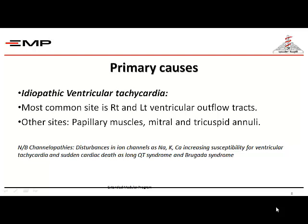Or it can originate from the left ventricular outflow tract — the outflow tract being the portion of the ventricle that extends from the AV valves to the great vessels. From the LV, it extends from the mitral outflow to the aorta; from the RV, from the tricuspid outflow to the pulmonary vessels. Other uncommon sites include papillary muscles, mitral annulus, and tricuspid annulus.